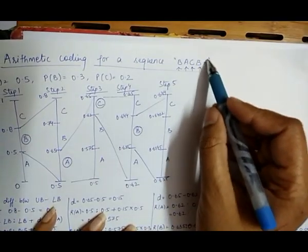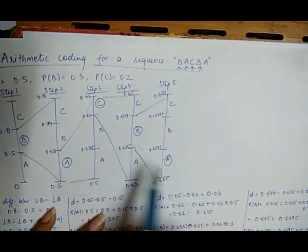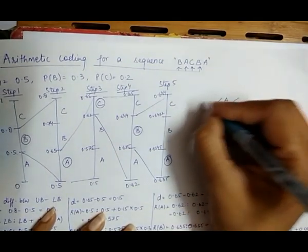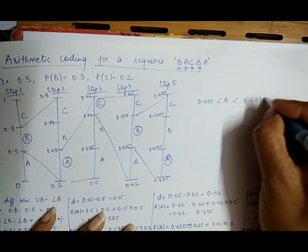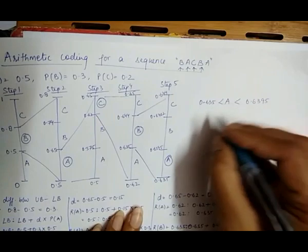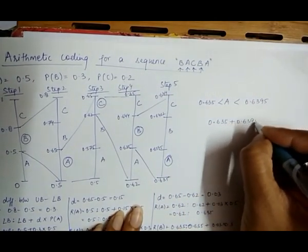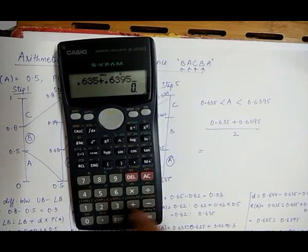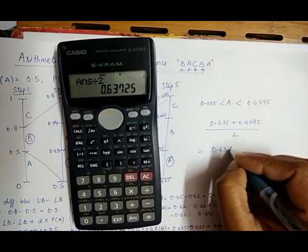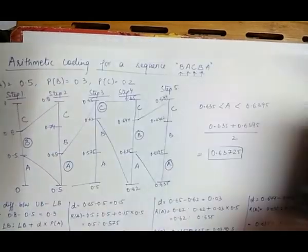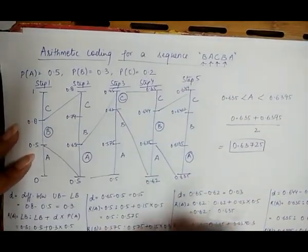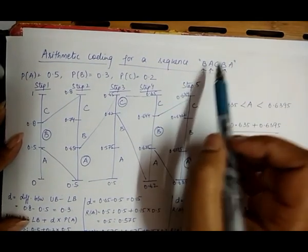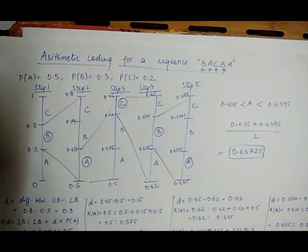The final symbol to encode is A. When we reach the terminator symbol, we do not calculate the next step — we simply note that A lies in the range [0.635, 0.6395]. To find the tag value, we calculate the average: (0.635 + 0.6395) / 2 = 0.63725. So the tag value for the sequence BACBA is 0.63725. In the next lecture, this tag value will be decoded back into the sequence.